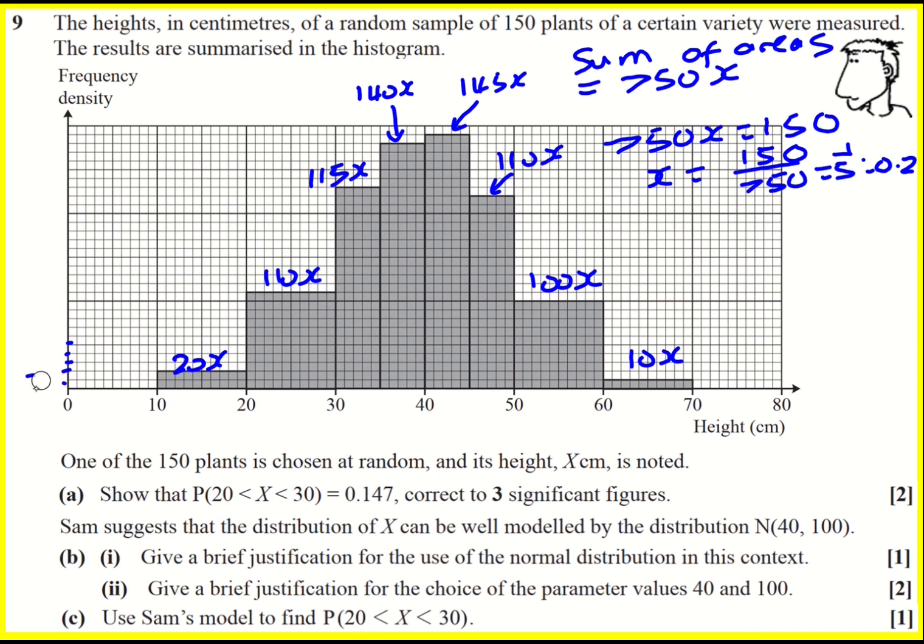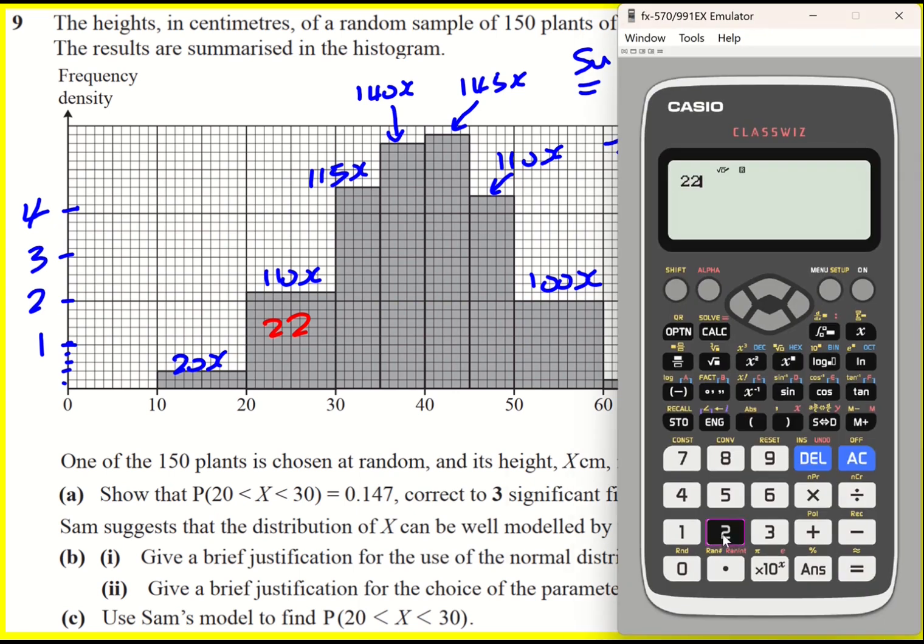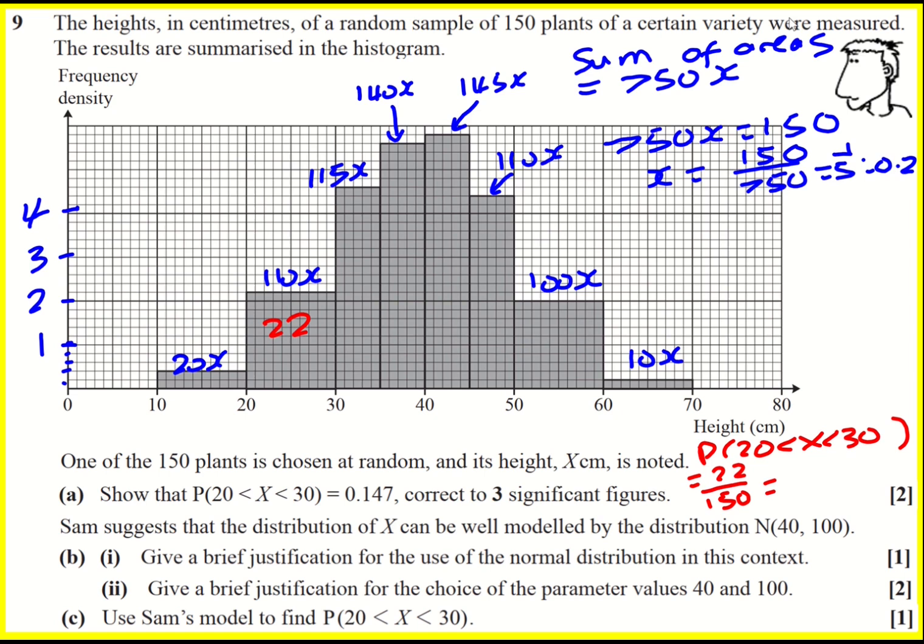So it's actually going up in 0.2s. I could even just add on these as one, two, three, four. So back to this probability then. We've got 110x times 0.2. And that is going to be 110 times 0.2 is 22. So it's 22. Probability that x is between 20 and 30 is 22 over 150, which is 11 over 75 or 0.146 recurring, which rounds to 0.147 to three significant figures.